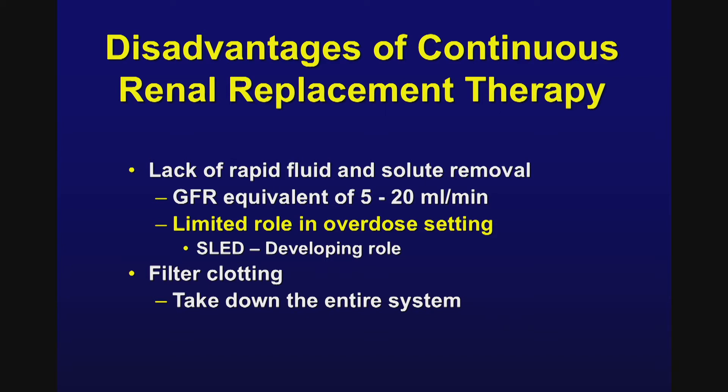The disadvantage of continuous renal replacement therapy is the lack of rapid fluid and solute removal. This is a slow process occurring over 24 hours, or 12 to 18 hours in the case of SLED. The effective GFR is in the range of about 5 to 30 or 40 mL per minute, so fluid and solute cannot be removed quickly. It has a very limited role in overdose settings where a toxin must be removed rapidly. CRRT is not effective there, and while there are early studies looking at SLED for overdose, those are still in early phases of investigation.